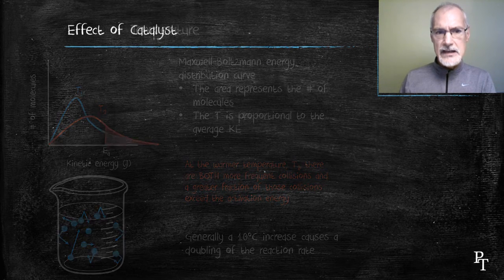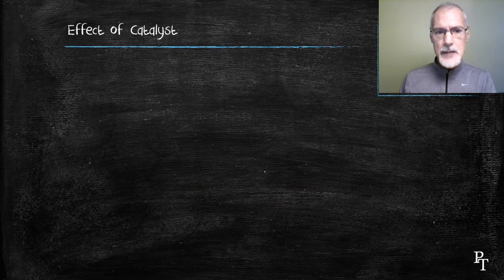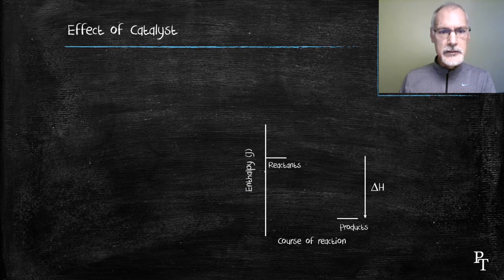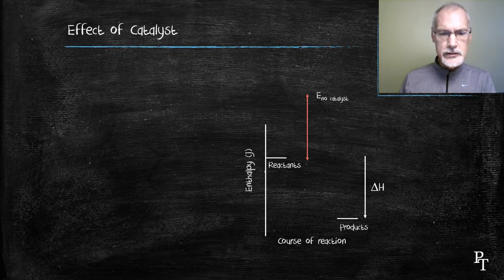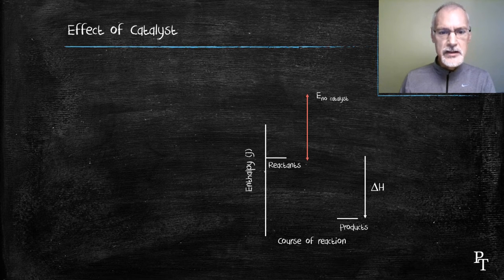Let's look at the effect of a catalyst. I'm going to consider an exothermic reaction to demonstrate this. We have a minimum energy requirement for my reaction to occur, shown here by the arrow in red — the activation energy for my reaction.